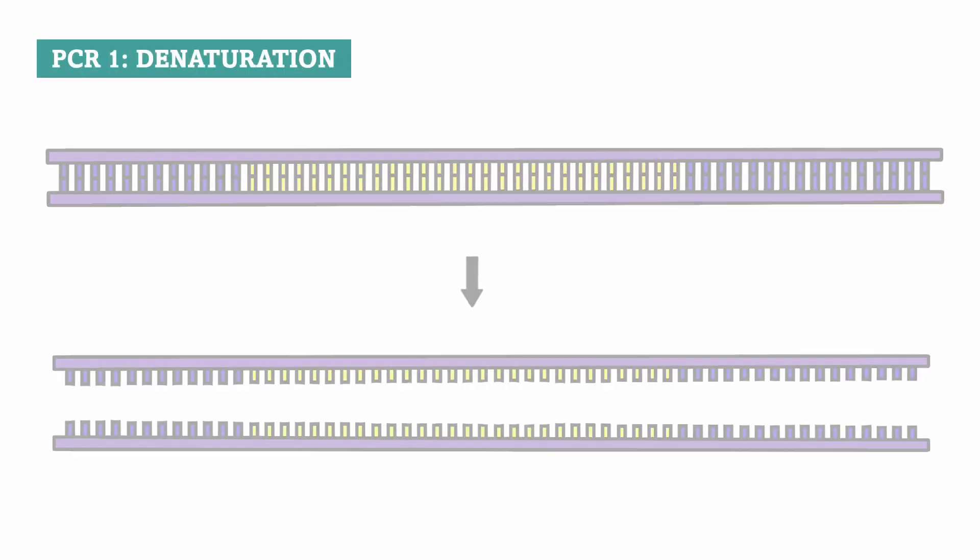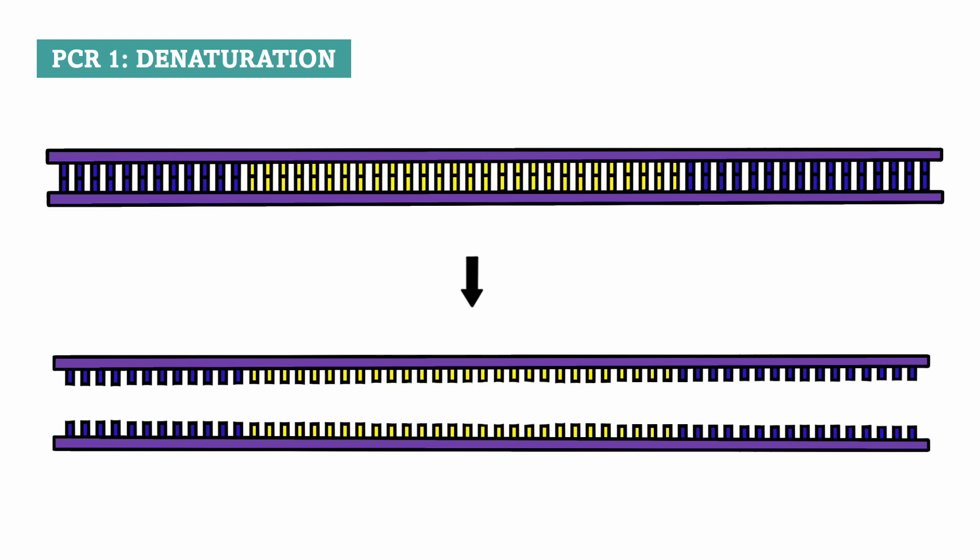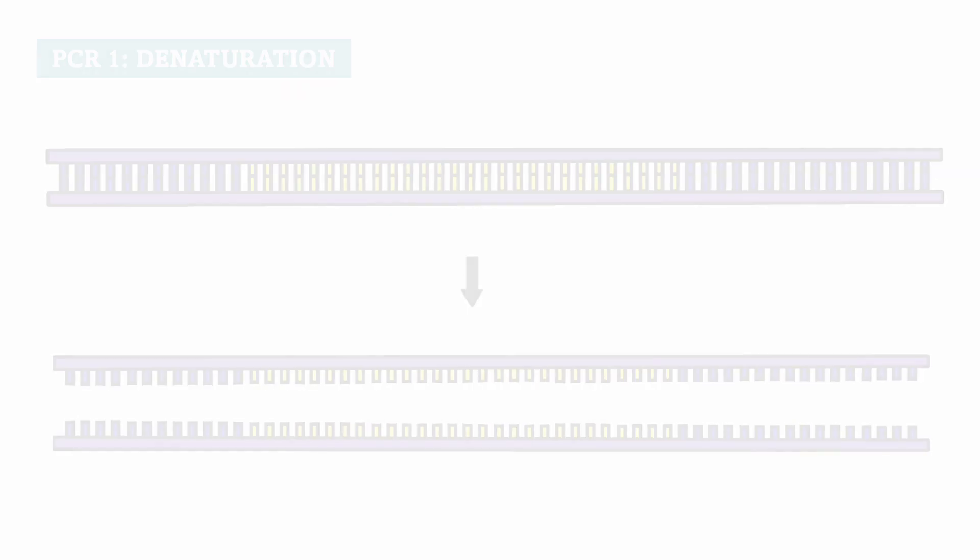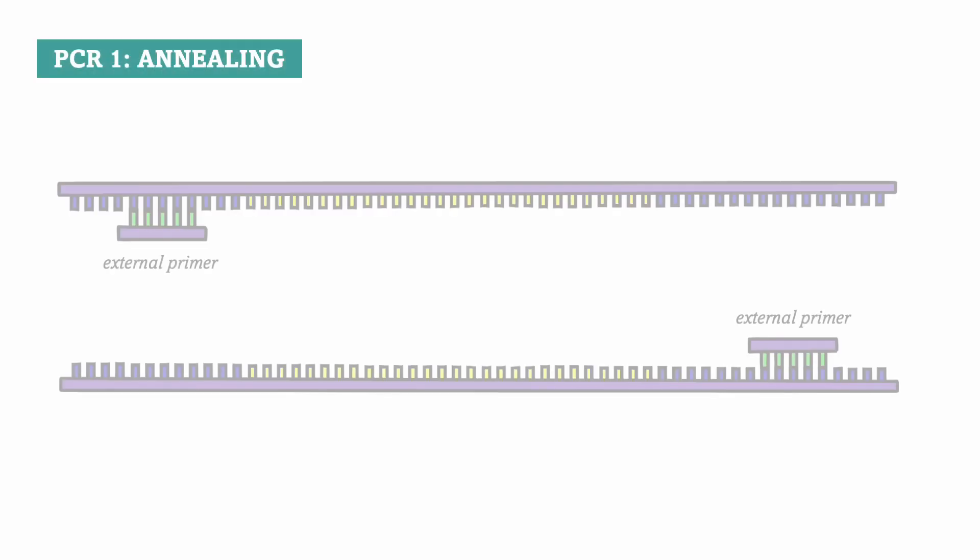Nested PCR actually consists of two PCR reactions. Each reaction uses a different set of primers. We start the first PCR with denaturation, when we heat the DNA to high temperatures and cause the two DNA strands to separate. Now in annealing, we use the so-called external primers.